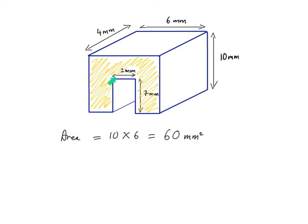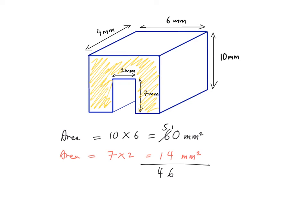The area of the smaller rectangle is 7 times 2, which is 14 millimeters squared. Now I subtract the area of the smaller rectangle from the larger rectangle to get the cross-sectional area. Subtracting: 60 minus 14. Borrowing as needed — that gives 46 millimeters squared. That's the cross-sectional area.